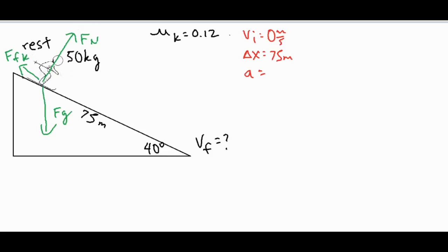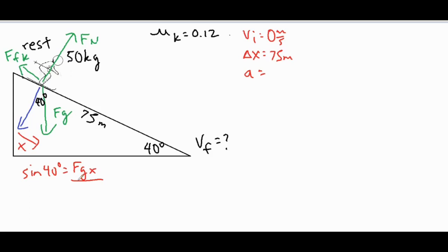We're going to break Fg up into two components: a perpendicular and a parallel component. That 40-degree angle translates up to this corner. The first thing we find is the horizontal component, which is opposite that angle, so we use sine: sine of 40° = FgX / Fg. Since Fg = mg = 50 × 9.8 = 490 newtons, the x-component comes out to 314.97 newtons.